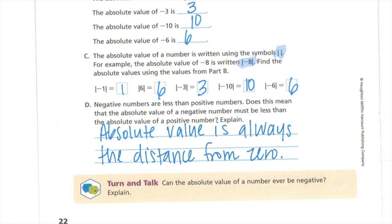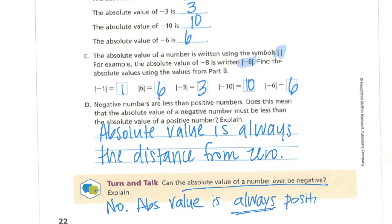The turn and talk is important. It says, can the absolute value of a number ever be negative? So absolute value is the distance. How many spaces or steps does it take to get to 0? So no, absolute value is always positive because it's the distance from 0. You can ask yourself, how many steps or how many spaces away from 0 is that number? And it's always going to be a positive number, no matter what.